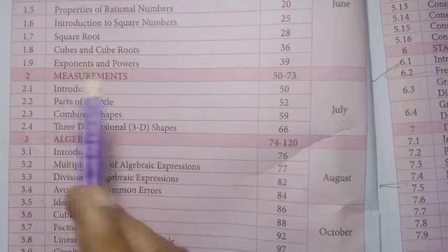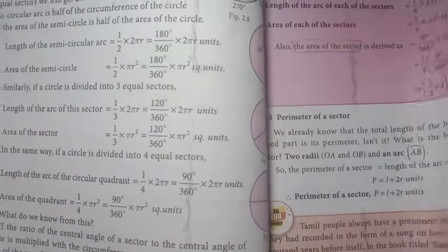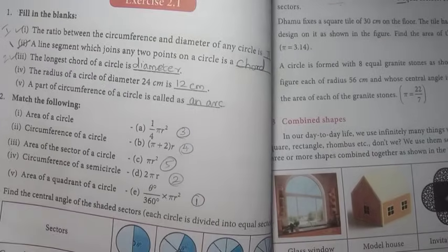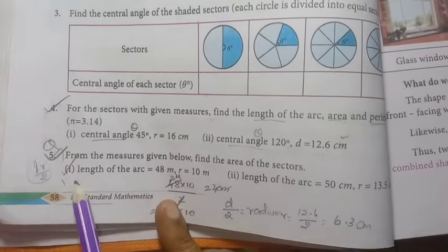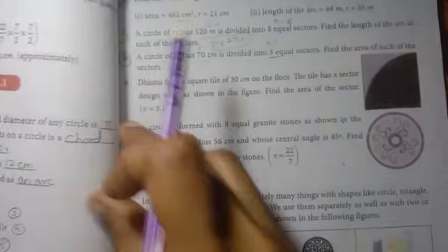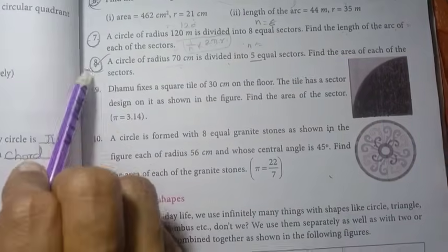Unit two is measurements. On page 50, look at measurements. They'll give you all the formulas. On page 58, fourth question and fifth one, first one will be asked in the quarterly exam. Questions four, five are important, then six, seven, eight.